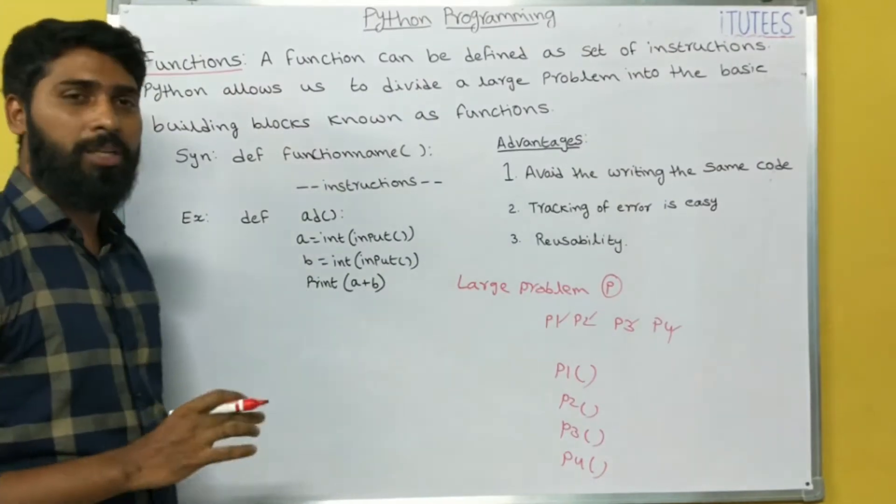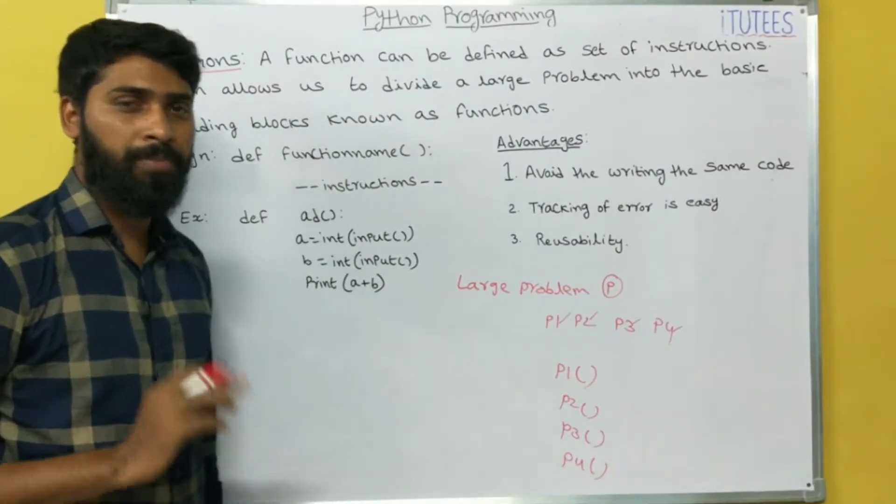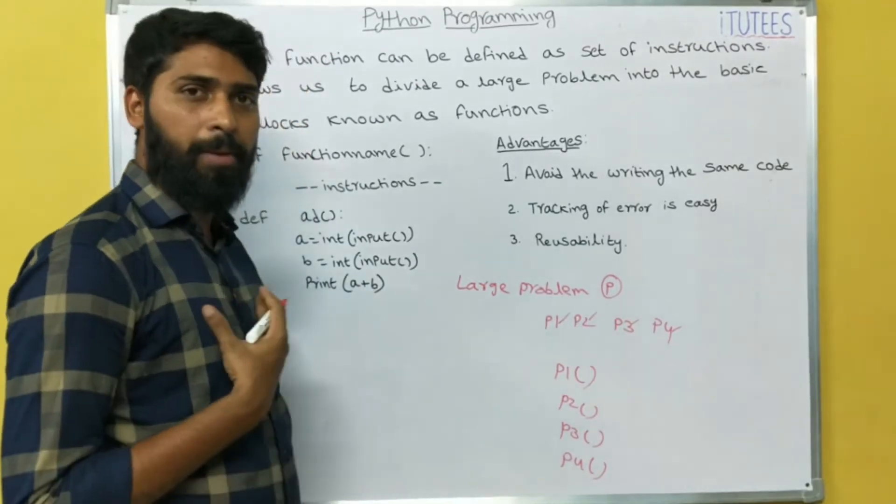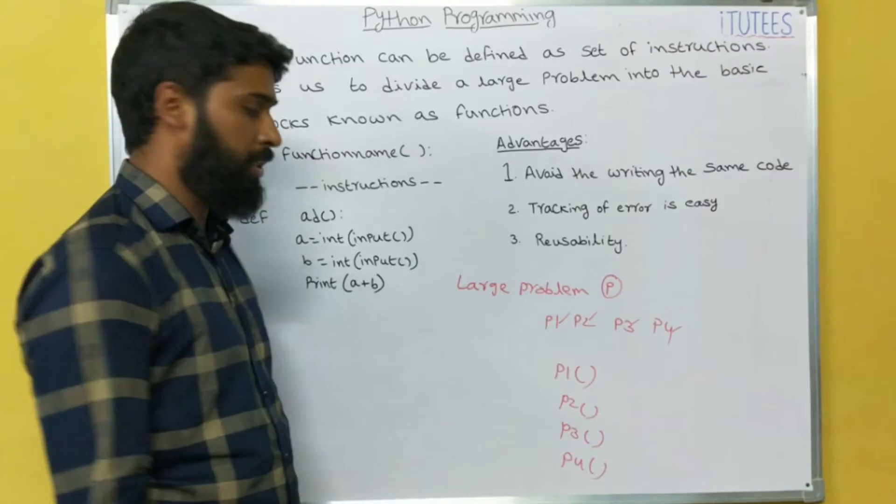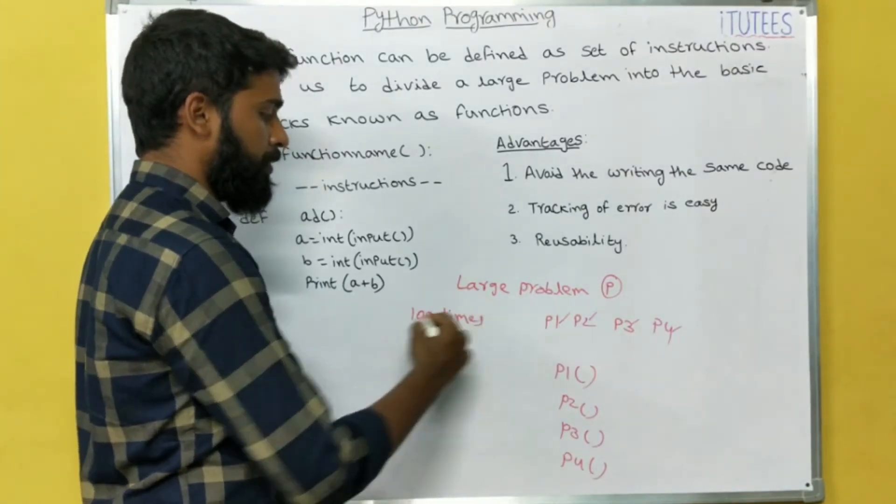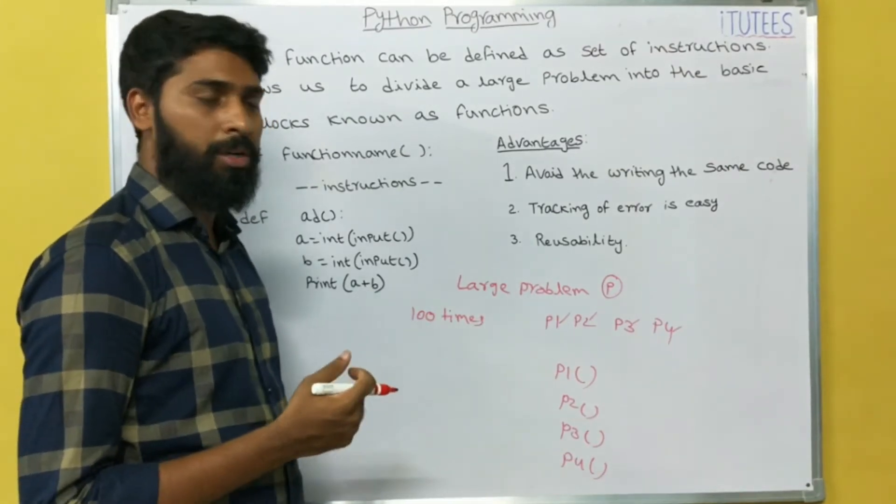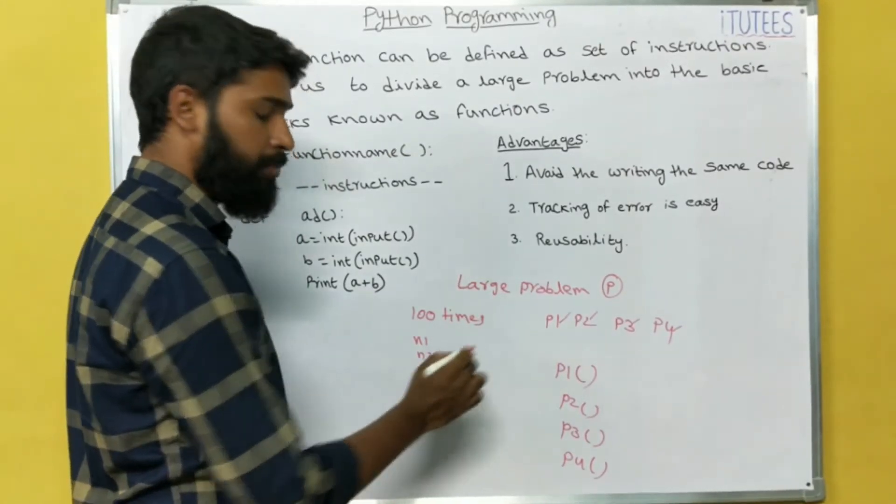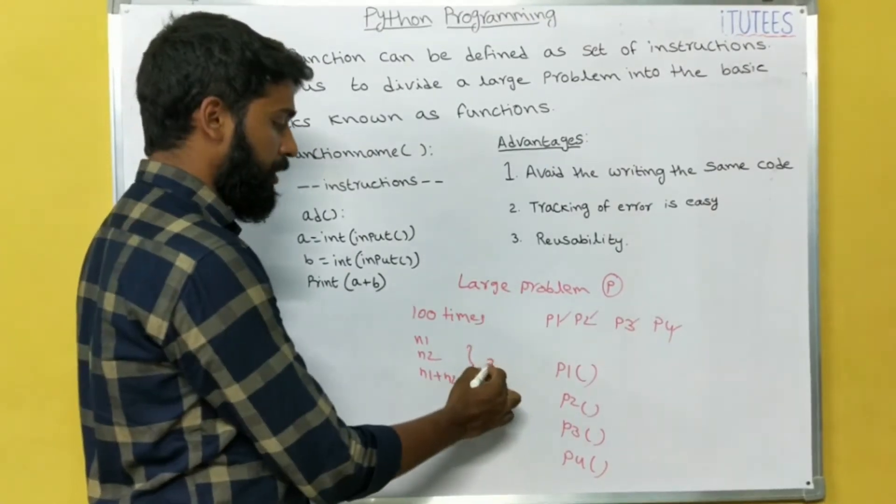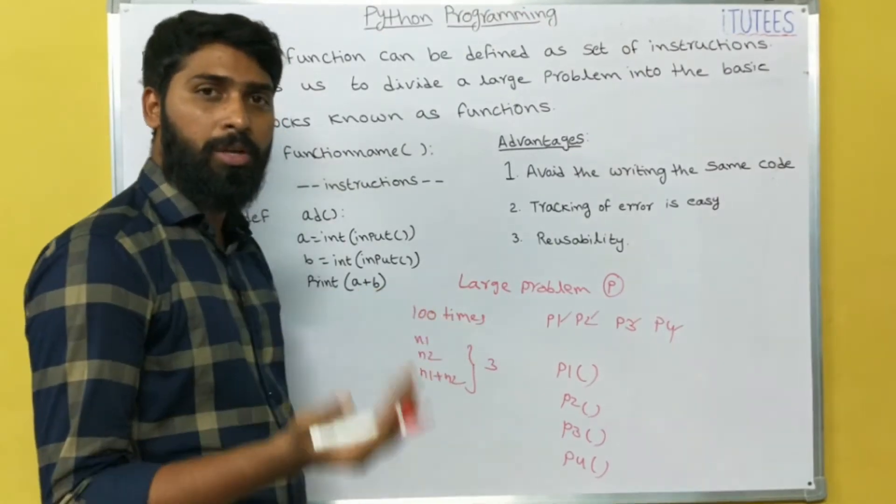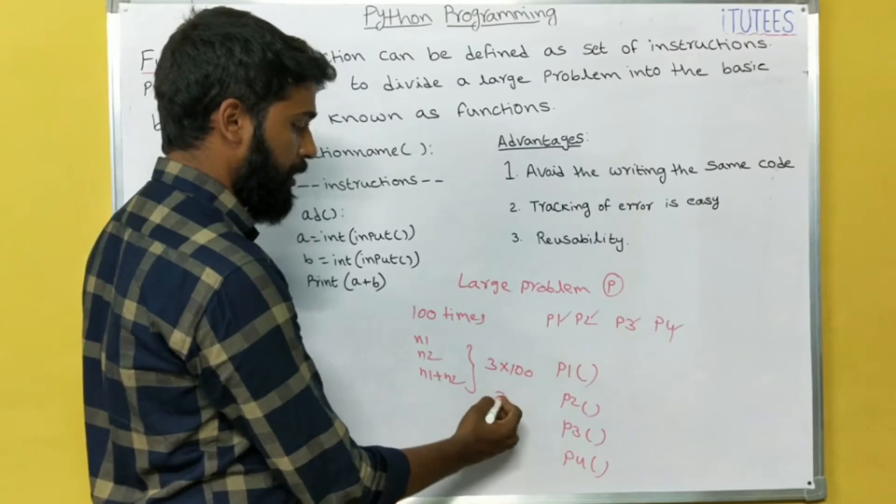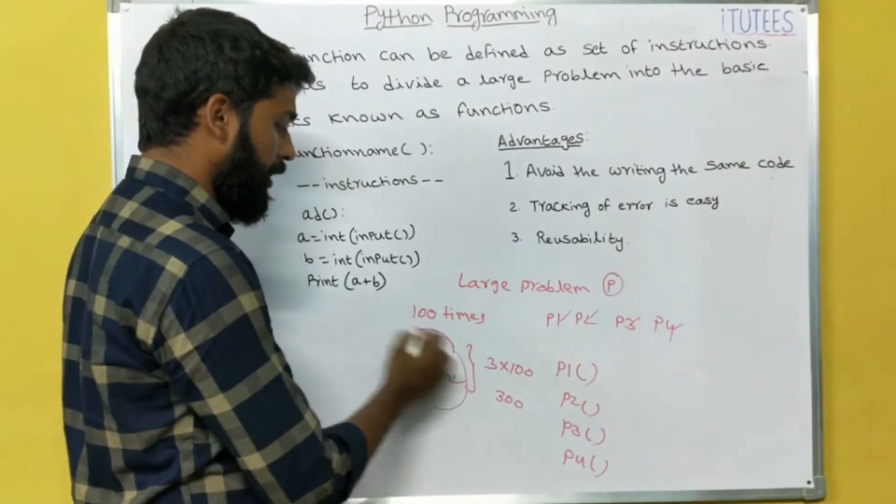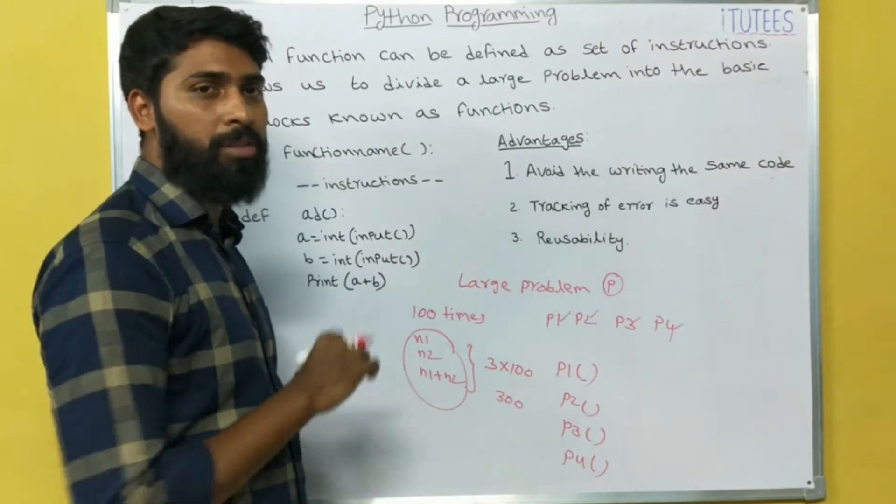Now we can see what are the advantages we have if you are using the functions in your program. The first advantage is, avoid writing the same code. For example, in my program I am going to do the addition operation 100 times. In every time I am going to ask the input from the keyboard. So that means two numbers N1, N2. And perform the addition N1 plus N2. So that means for one addition we are going to write three instructions. So for 100 times, 3 into 100, that means 300 instructions I am going to write. By using functions we can minimize this.